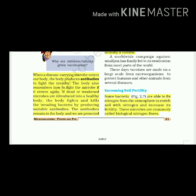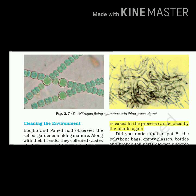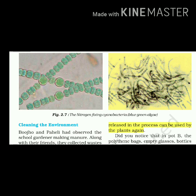Some bacteria are able to fix nitrogen from the atmosphere to enrich soil with nitrogen and increase its fertility. These microbes are commonly called biological nitrogen fixers, as shown in figure 2.7. This is the nitrogen-fixing microorganism - it is a blue-green algae, biologically known as cyanobacteria.